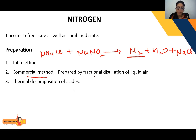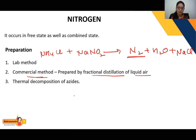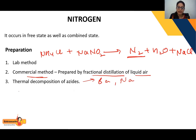The next is the commercial method — you can get nitrogen commercially by the fractional distillation of liquid air. Another method is by thermal decomposition of azides, especially barium azide and sodium azide. N₃⁻ is the azide ion.